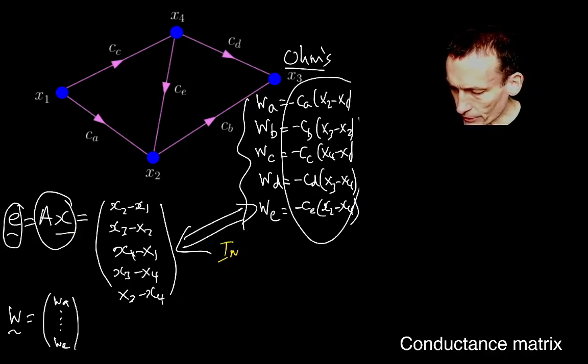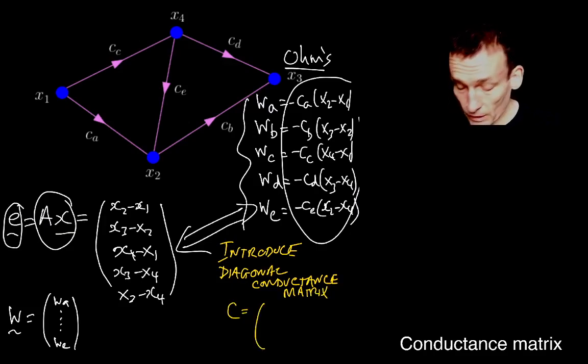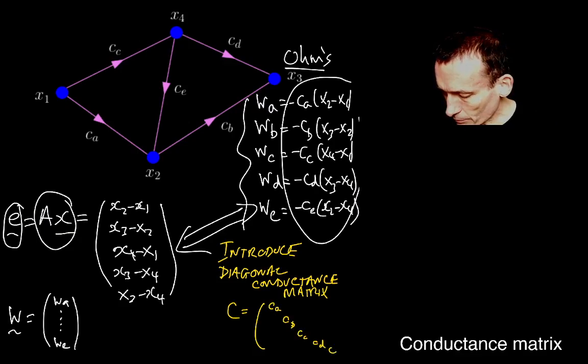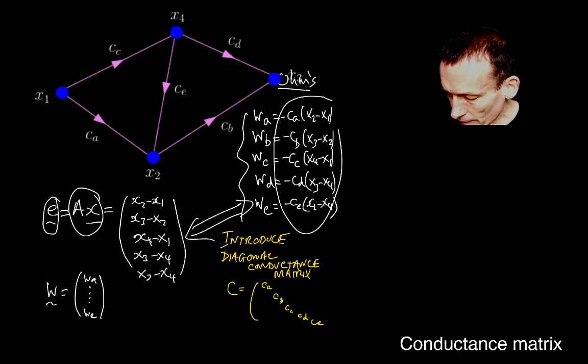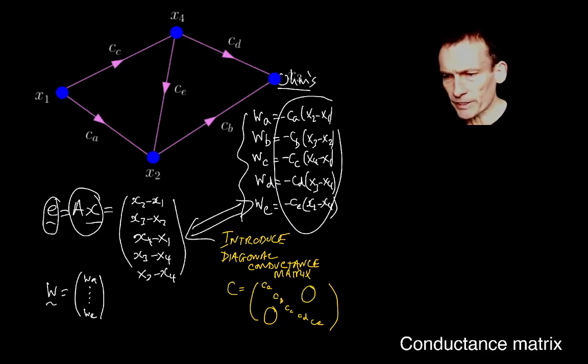So let me just do this in yellow. I have to introduce a diagonal matrix. And I'm going to call it a conductance matrix. And here it is. Can you see what it's got to be? It's got to be five by five. And it will be diagonal with all of the conductances. Let me just make it a bit bigger. It's going to be diagonal, so there's going to be zeros everywhere off this diagonal of five elements. And all I've done is I've put the conductances, which are all positive quantities, CA, CB, CC, CD, CE, in the diagonal.